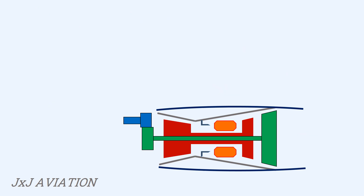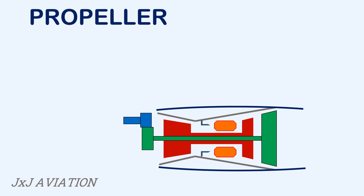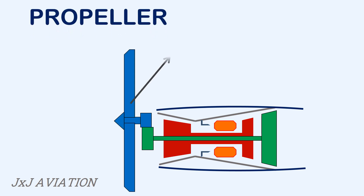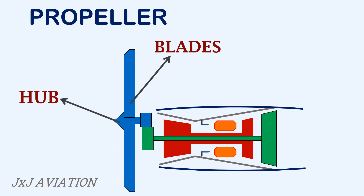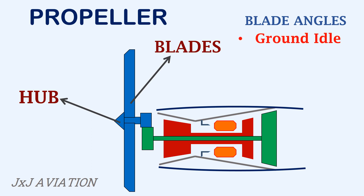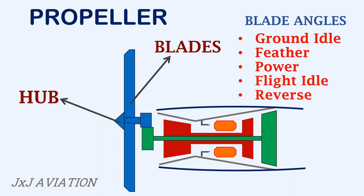The propeller consists of a series of airfoil shaped blades connected to a hub and assembled on a shaft coming from the reduction gearbox. In modern turboprop aircraft, the blade angles will vary depending on the throttle setting. There are different blade angles for different settings such as ground idle, feather, power, flight idle and reverse.